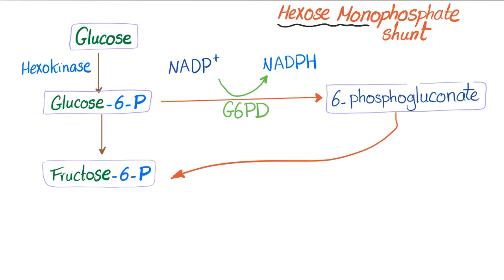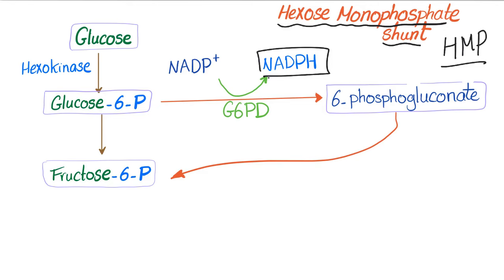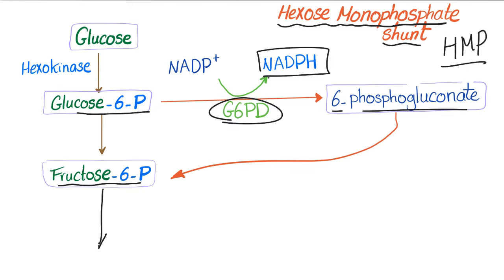But there is a shunt called the hexosemonophosphate shunt, or HMP shunt. Why shunt? To form this amazing compound: NADPH. Thanks to the enzyme G6PD, the glucose 6-phosphate will be converted into 6-phosphogluconate. The 6-phosphogluconate can go back into glycolysis through the fructose 6-phosphate step and go down until we have pyruvate. Without G6PD there is no NADPH.